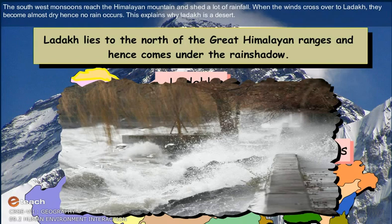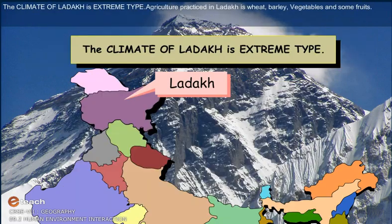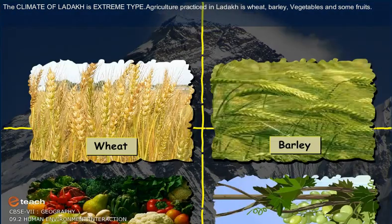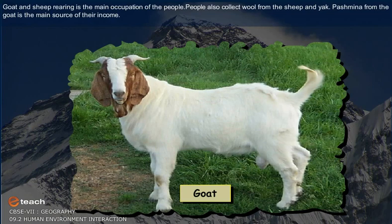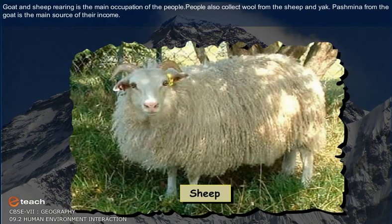Hence, no rain occurs, which explains why Ladakh is a desert. The climate of Ladakh is of an extreme type. Agriculture practiced in Ladakh includes wheat, barley, vegetables, and some fruits. Goat and sheep rearing is the main occupation of the people.